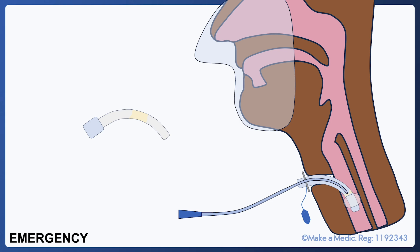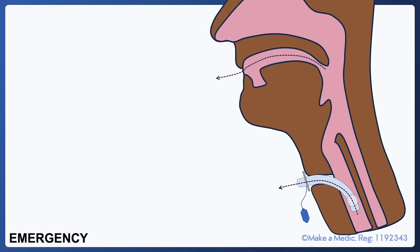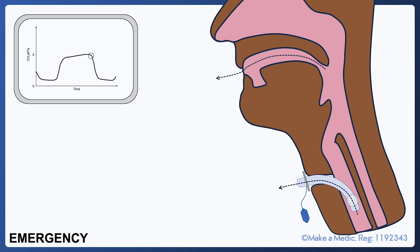If the suction catheter cannot be passed, the cuff should be deflated and you should look, listen, and feel at the mouth and tracheostomy for exhaled air. Waveform capnography should be used if available to confirm that the patient is breathing and the airway is patent. If the patient is stable or improving, it is likely that the tracheostomy tube is partially obstructed or displaced.